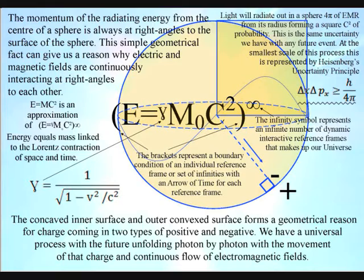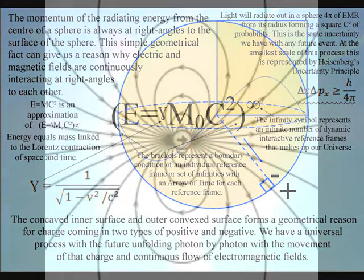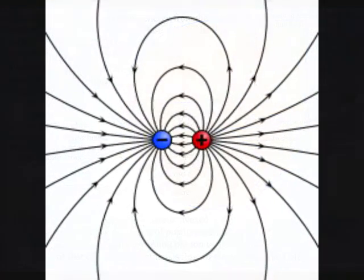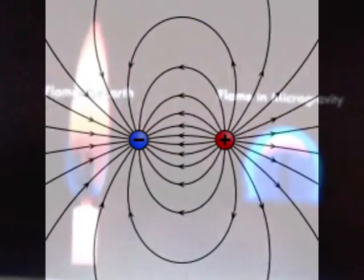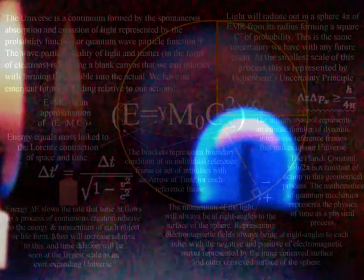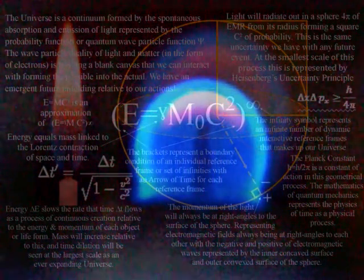This represents the movement of positive and negative charge with the continuous flow of electromagnetic fields within three-dimensional space. The dynamic symmetry of this process can actually be seen in these images from the International Space Station, with a candle flame naturally forming a sphere in zero gravity that is interacting with the environment on the two-dimensional surface of the sphere.